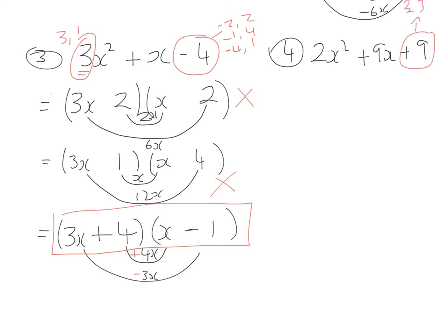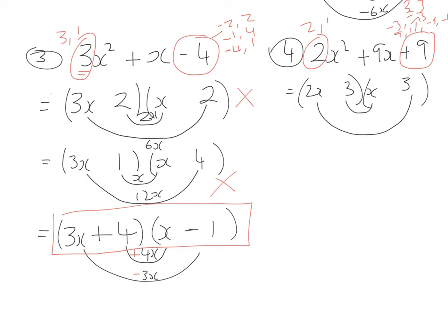Last question: +9 can be broken into 3 and 3, -3 and -3, 9 and 1, or -9 and -1. The coefficient 2 splits only as 2 and 1, giving 2x and x. Trying 3 and 3: smiley face gives 3 times x = 3x and 2x times 3 = 6x. Both as positives: 3x + 6x = 9x, which matches our middle term. Both signs are plus, so the answer is (2x + 3)(x + 3).